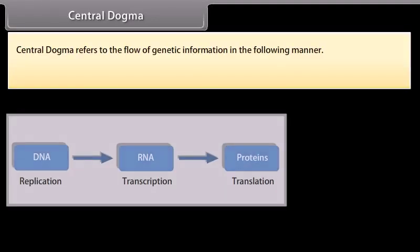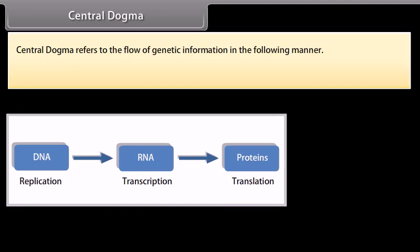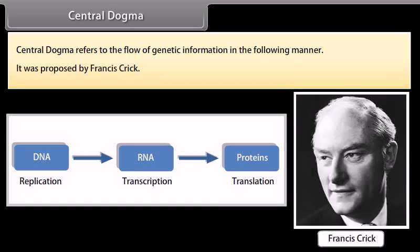Central Dogma refers to the flow of genetic information. It was proposed by Francis Crick.